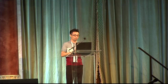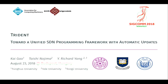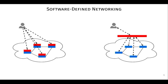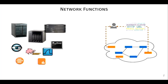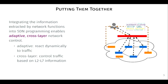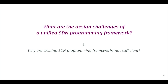SDN simplifies network management with logically centralized network control. A lot of network functions are also deployed in the network. After analyzing traffic, they can extract useful information such as whether a host is a heavy hitter or the joint location of a host — these are layer-saving informations. Combining SDN and network functions into a unified programming framework might enable adaptive and cross-layer network control, where a network program can react dynamically to traffic characteristics and control traffic based on layer 2 to layer 7 information — we refer to this as unified SDN programming. The first challenge is how to integrate network function state into SDN programming.